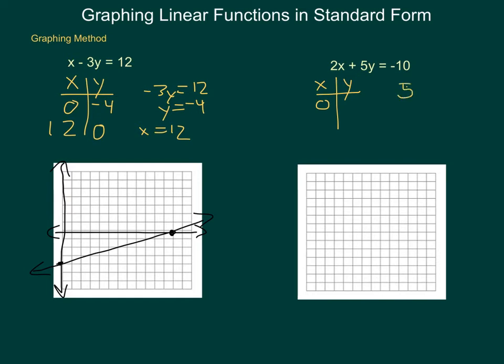Dividing by 5, I have y equals negative 2. Next, if I make y zero, I'd have 2x equals negative 10. So x would have to be negative 5.